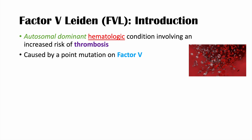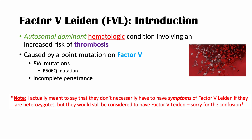One mutation in particular is the R506Q mutation. Factor V Leiden also exhibits incomplete penetrance. So even though it is an autosomal dominant condition requiring only one affected allele, not every person that has an affected allele will necessarily develop this condition. People only need one affected allele, but not every single person with one affected allele will actually have this condition.